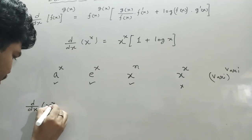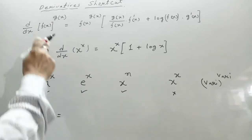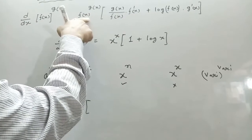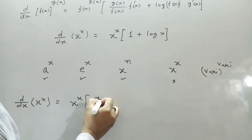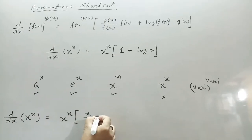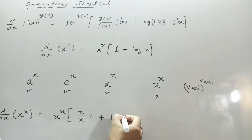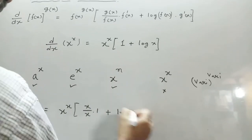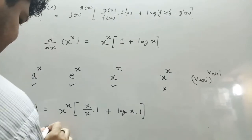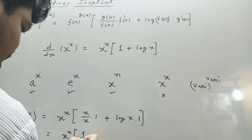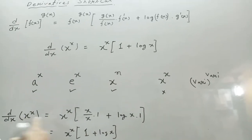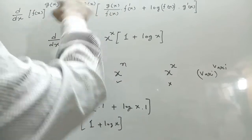Now applying the formula: derivative of x to the power x. Here f(x) = x and g(x) = x. So we write x^x as it is, then g(x)/f(x) times f'(x) gives x/x times 1, plus log(x) times the derivative of g(x) which is 1. After simplification, the answer is x^x times (1 plus log x).